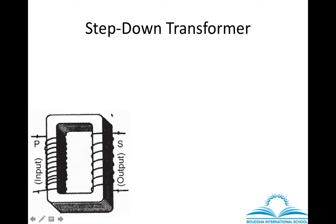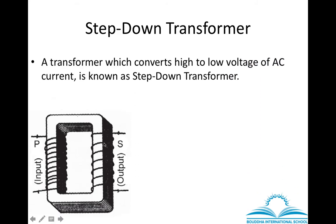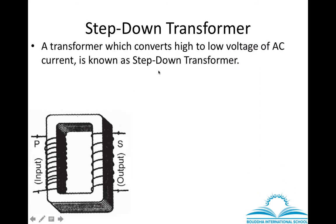Now the step-down transformer: again, to identify it, always check the secondary coil. If the secondary coil has fewer turns than the primary coil, it can produce low voltage of AC current — meaning high voltage input is converted to low voltage output. That is why it is called a step-down transformer. It converts high voltage of AC current into low voltage of AC current.